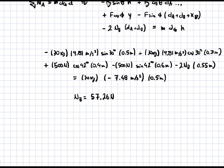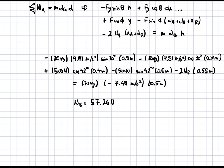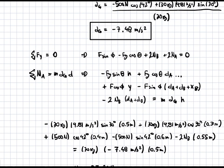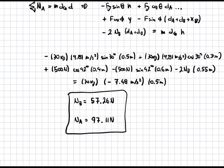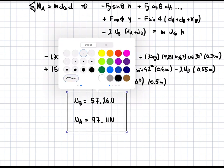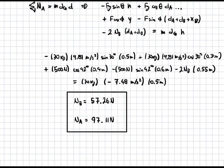With NB found, we go back to the sum of forces in the y direction, plug in NB, and solve for NA. This gives NA = 97.11 N. These are our final answers for the normal forces on the wheels — NB is the normal force on each front wheel and NA is the normal force on each back wheel, with four wheels total.